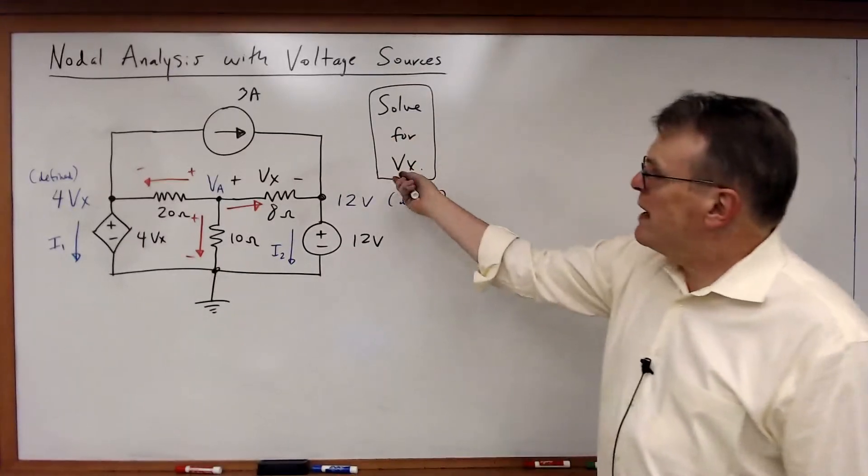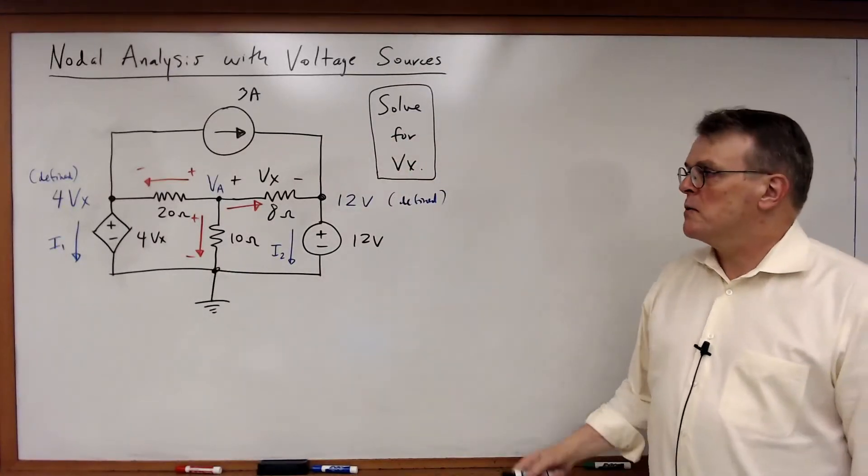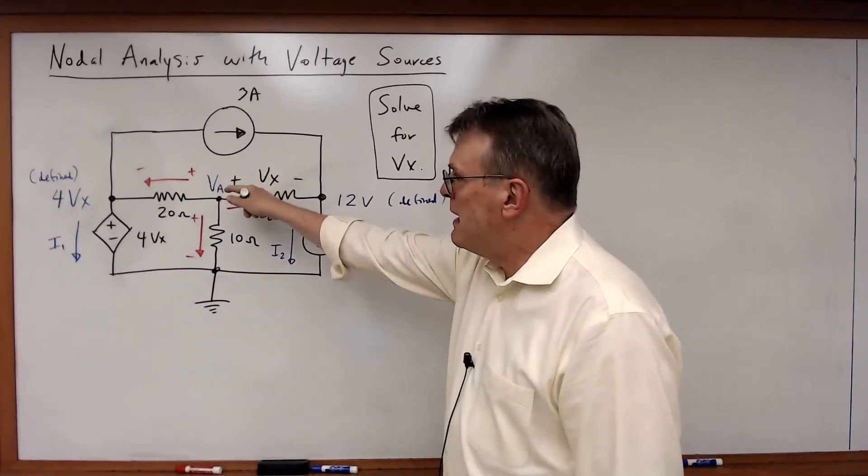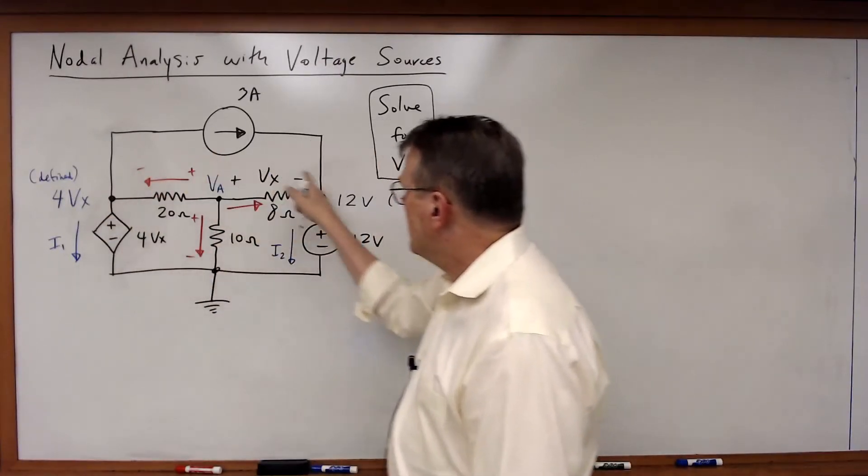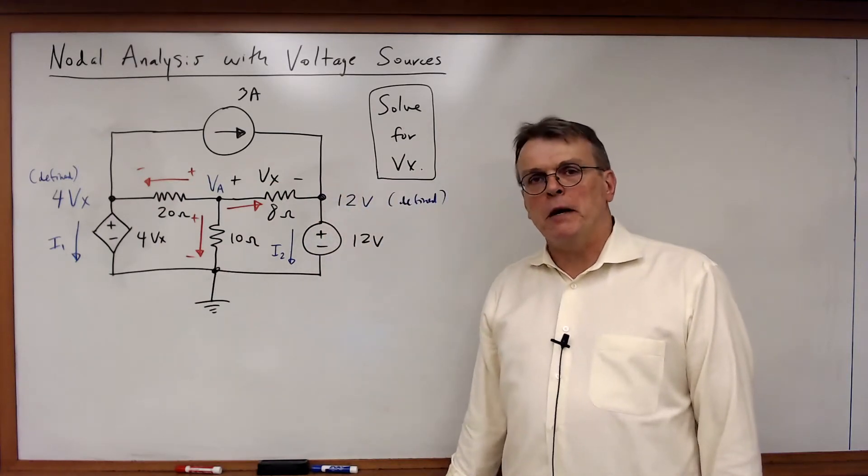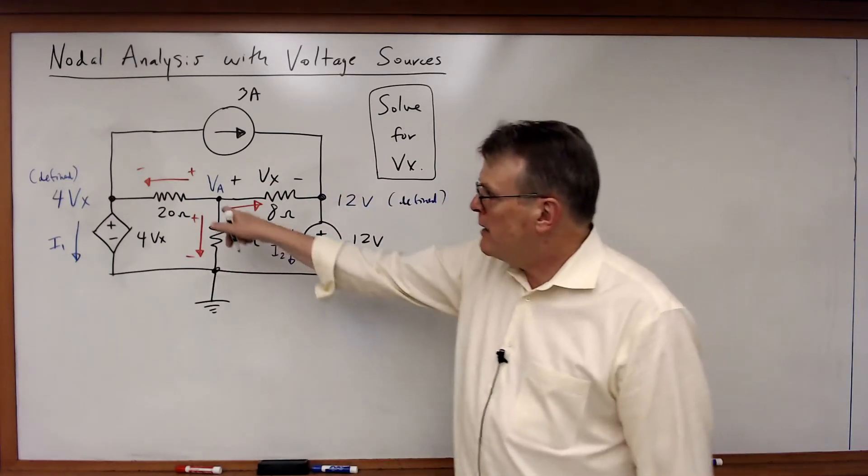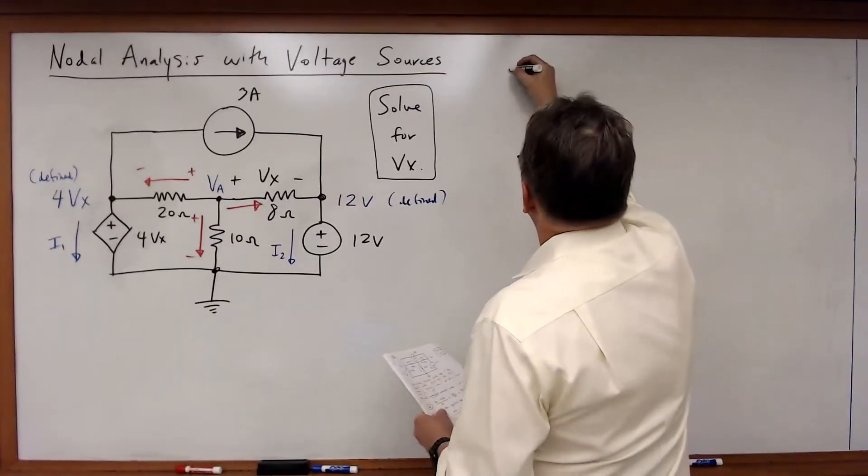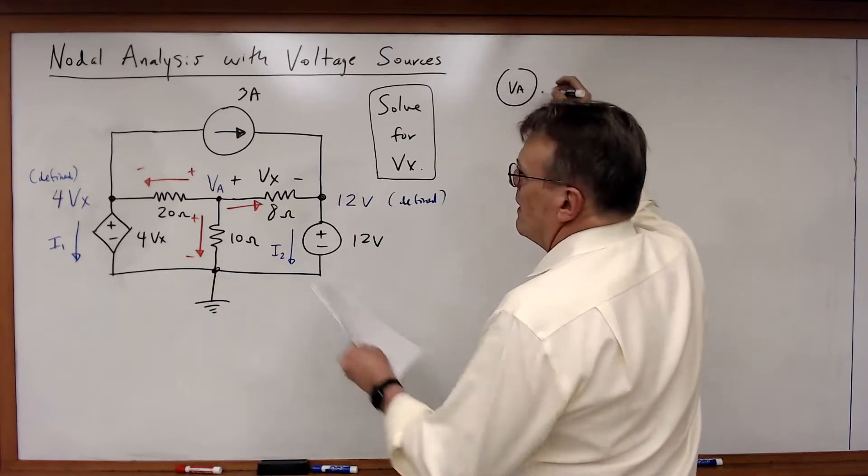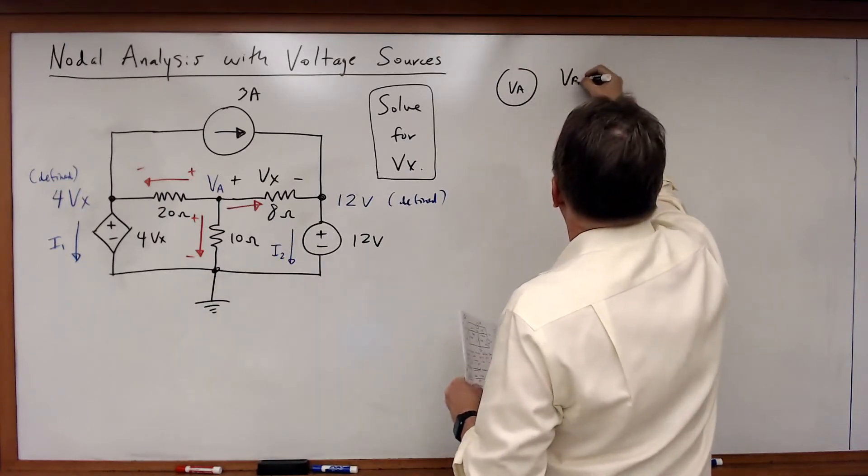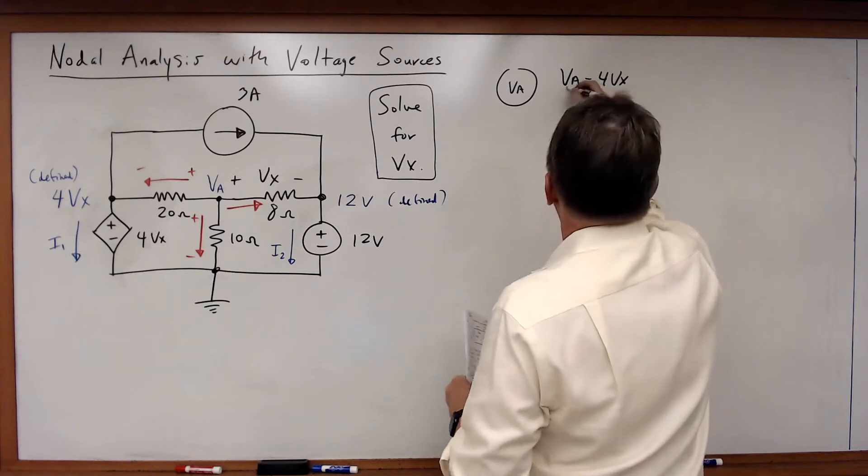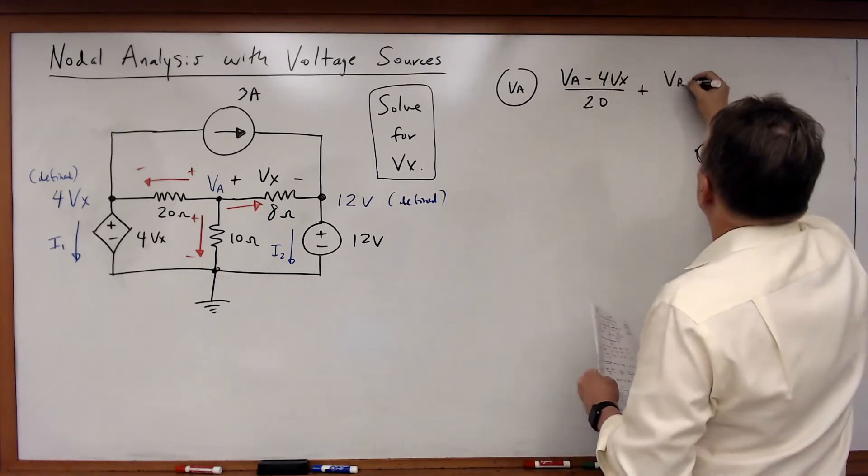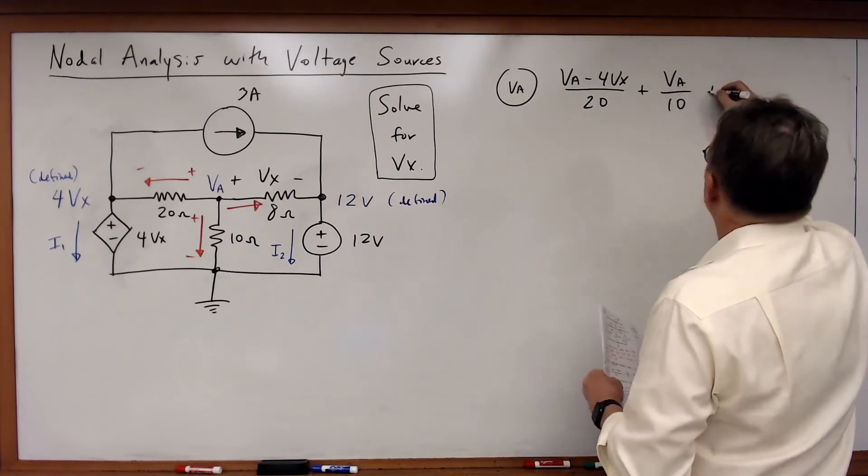Okay, let's solve and let's find the value of Vx. So in this case, what do we need to solve this? If I want to find VA, I do not need the two defined voltages. I don't need the KCL equations at those nodes. I can write the equation strictly for VA. So let's do that. In this case for the VA node: (VA - 4Vx)/20 + VA/10 + (VA - 12)/8 = 0.